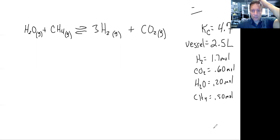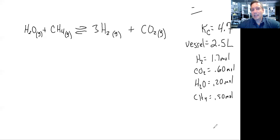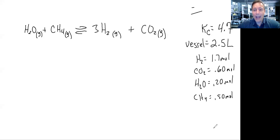Then it gave you a little bit more information. It said that hydrogen gas is 1.7 moles, carbon dioxide is 0.60 moles, water vapor is 0.20 moles, and methane is 0.50 moles. You're given that and asked: is this in equilibrium, or is it going to be product-driven or reactant-driven?